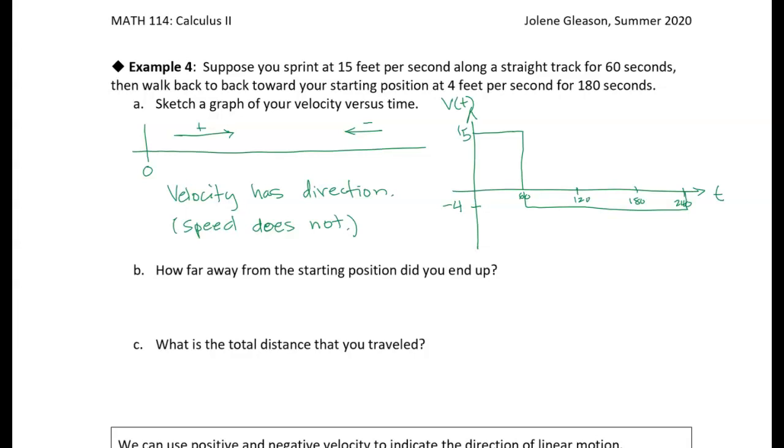Okay? So, but now the next thing we're asked to do is find how far away from the starting point you end up. Right? So, all right, we can look at the graph of the velocity versus time and find the area. Right? So this area for the first 60 seconds, the area is equal to 15 times 60 seconds. So 15 feet per second times 60 seconds gives us 900 feet. Okay? So we ran 900 feet initially.